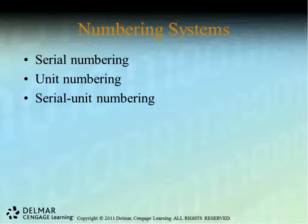Table 7-1 in your textbook on page 207 gives you the advantages and disadvantages of each type of numbering system. The first is the serial numbering system, which assigns a new number each time a patient is admitted. If a patient has multiple admissions, they will have multiple numbers, which means records could be everywhere — all over the place — in multiple locations. That causes complications in trying to locate all previously assigned numbers, which is a disadvantage.